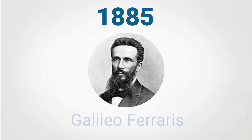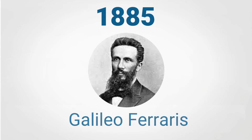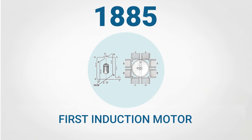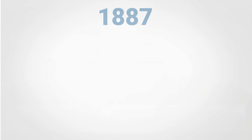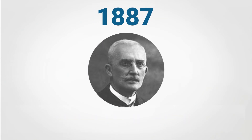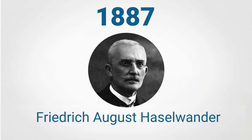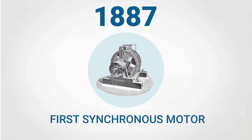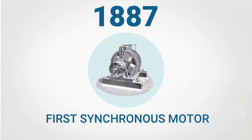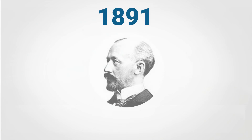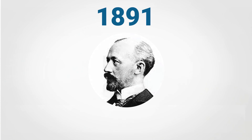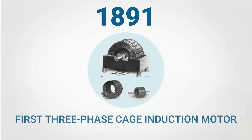In 1885, Galileo Ferraris builds the first induction motor. In 1887, Friedrich August Haselwander is the first one to come up with the idea to use a three-phase alternating voltage and current system. In 1891, Michael Dolivo-Dobrovolsky builds the first three-phase cage induction motor.